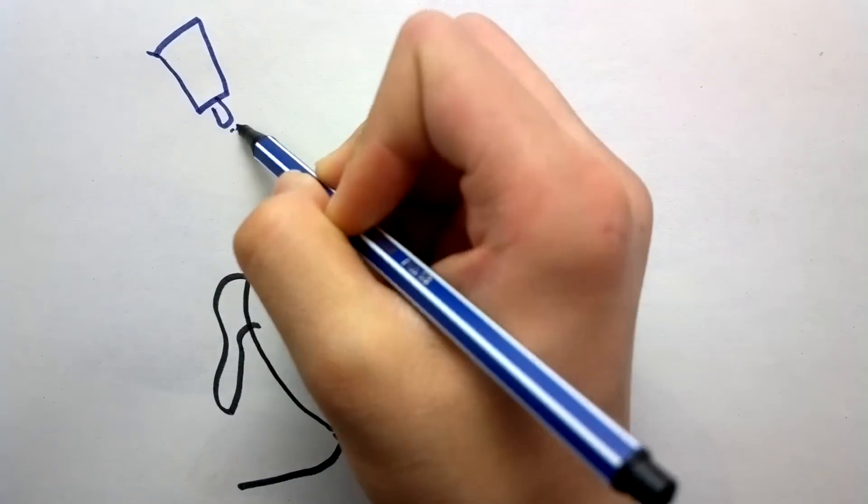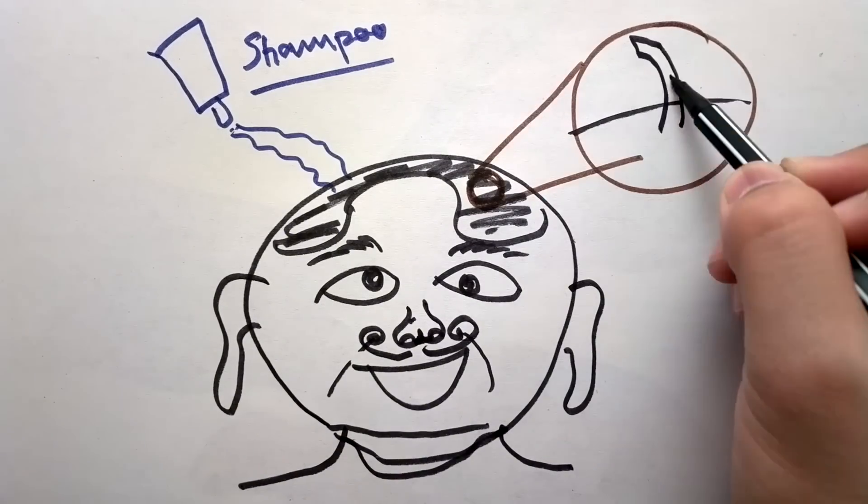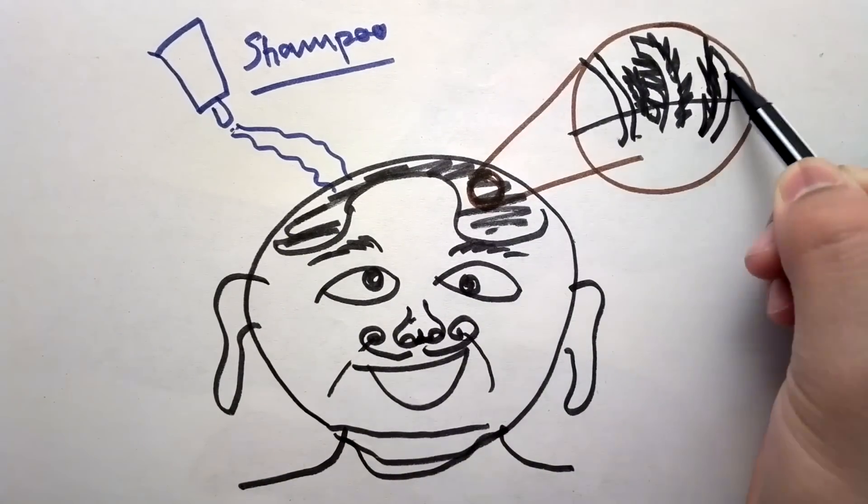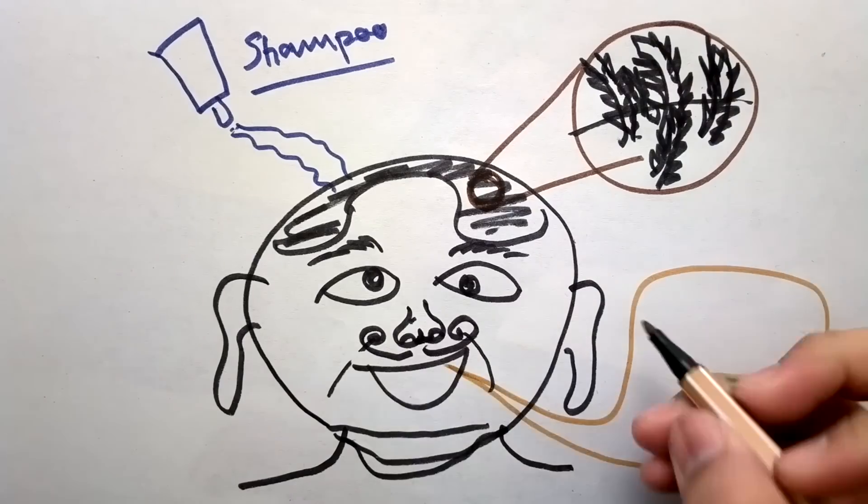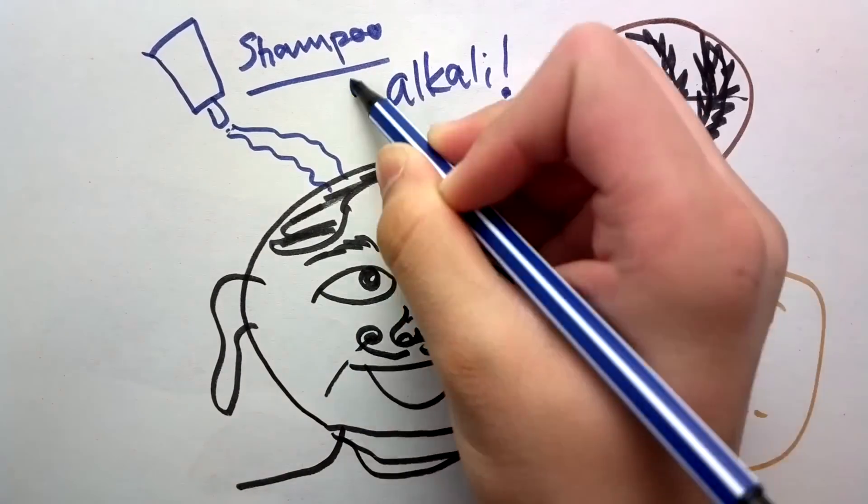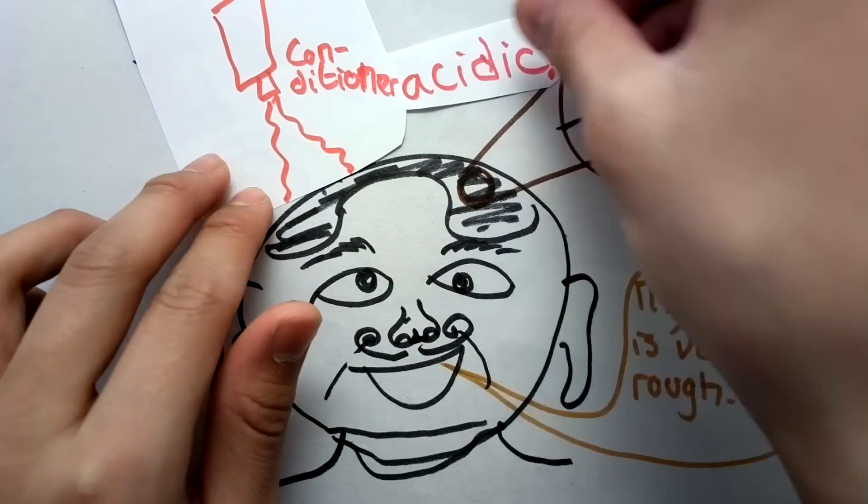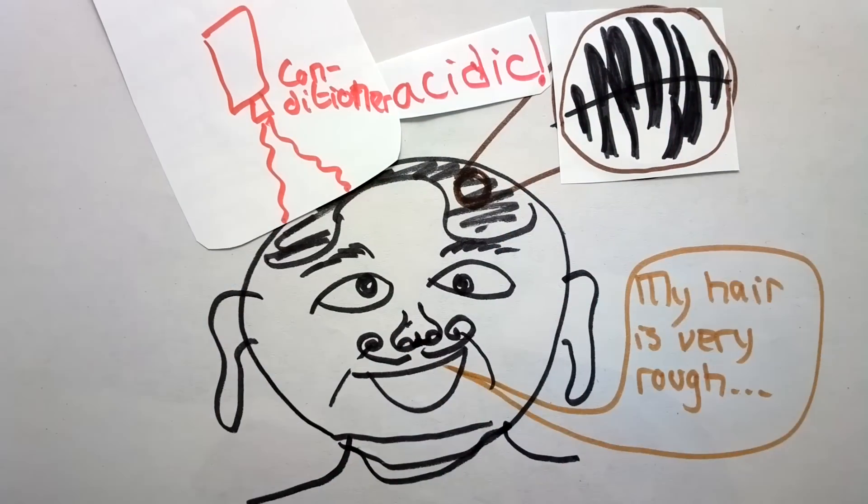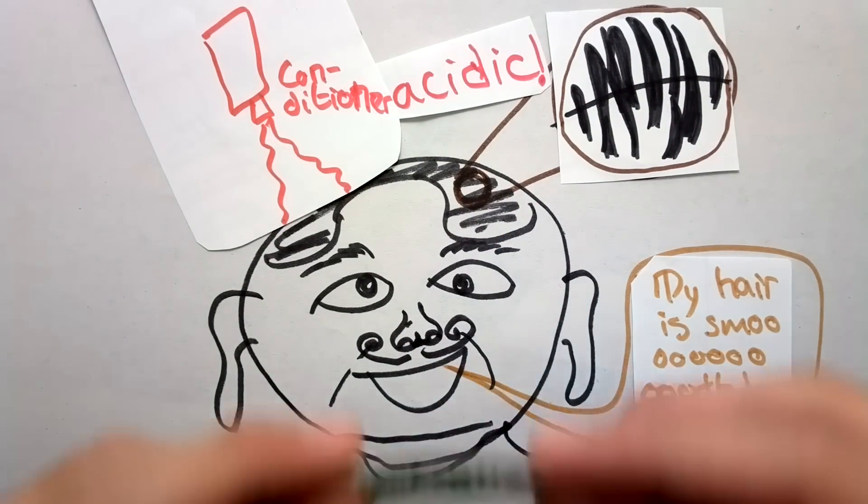Also, shampoos are mild alkaline, which causes small scales on each of our hairs, which makes our hair unmanageable. Well, rough. Hair conditioners are mildly acidic. When used, the acidity in the hair conditioner will neutralize the alkali from the shampoo and cause the scales to close up.